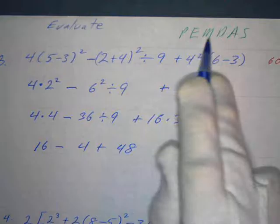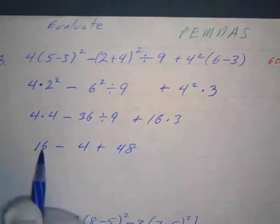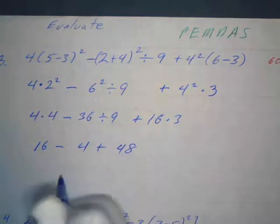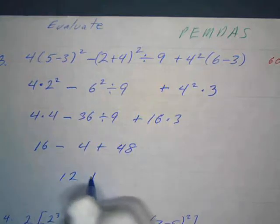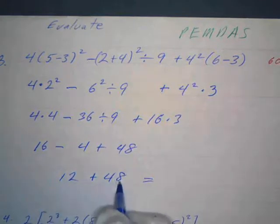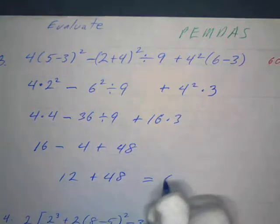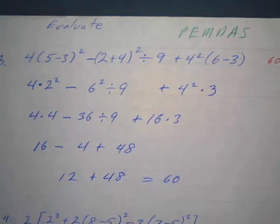I've done my parentheses, exponents, multiplication and division from left to right. Now do add and subtract from left to right. What's sixteen minus four? That's twelve. And twelve plus forty-eight is, well, two plus eight is ten, forty plus ten makes sixty. So there you go.